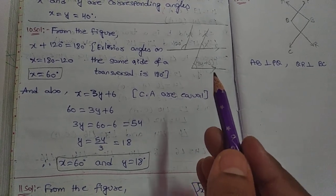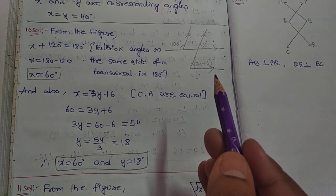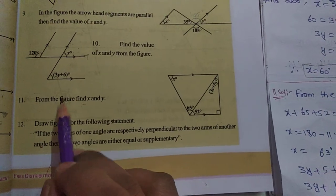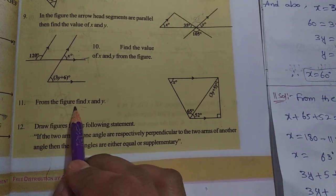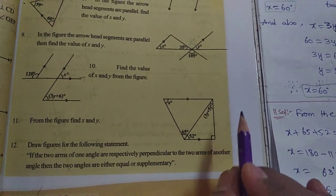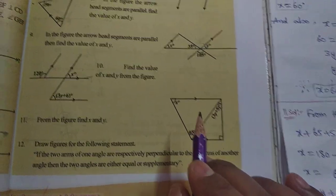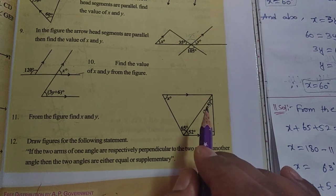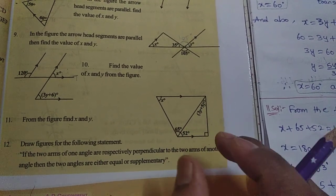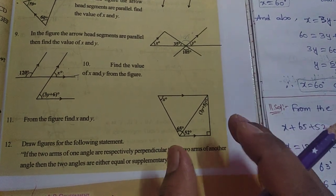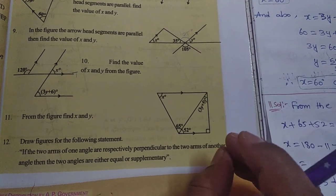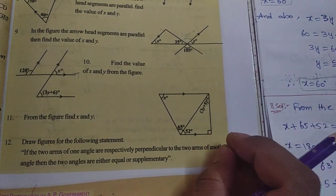One of them is going to be a compulsory starting introduction with important points — watching the introduction video is compulsory. Next, the 11th problem: from the figure, find x and y. Here you can find the x and y values. These two are the parallel lines, with this one as the transversal line. It is the same side of the transversal line, which is 180 degrees. We can apply corresponding angles and alternate interior angles.